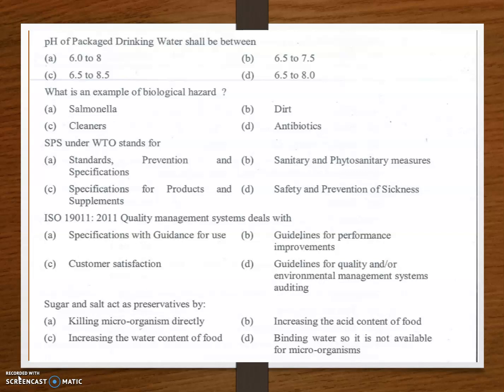Sugar and salt act as preservatives by — the answer is option D: binding water so it is not available for microorganisms. Sodium chloride changes the osmotic pressure; both sugar and salt change the osmotic pressure of the environment, reducing available water. This reduces the chances of bacterial spoilage, which is how sugar and salt act as preservatives.